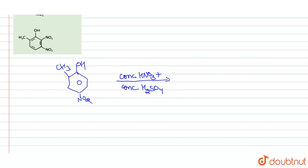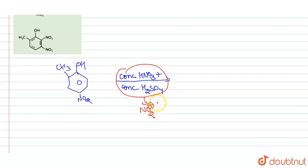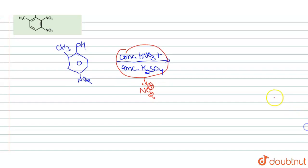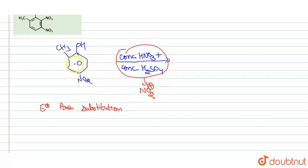In this case the electrophile generated is NO₂⁺. This is an aromatic hydrocarbon and the incoming species is an electrophile, so the type of reaction that takes place is electrophilic aromatic substitution.